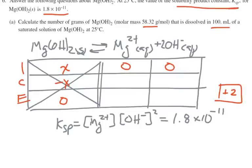So if X of this goes away, then I'm going to form X molar magnesium and 2X for my hydroxide. So at equilibrium, or at my saturated solution, this is going to be X and this is going to be 2X. Those are my concentrations of my solution, of my ions.